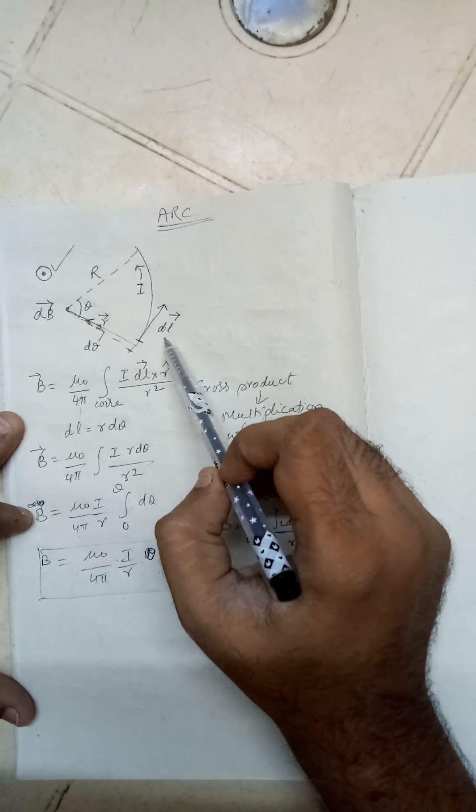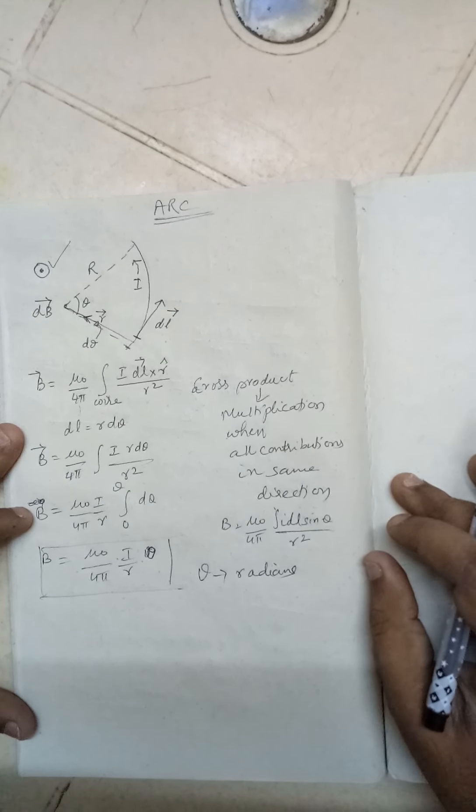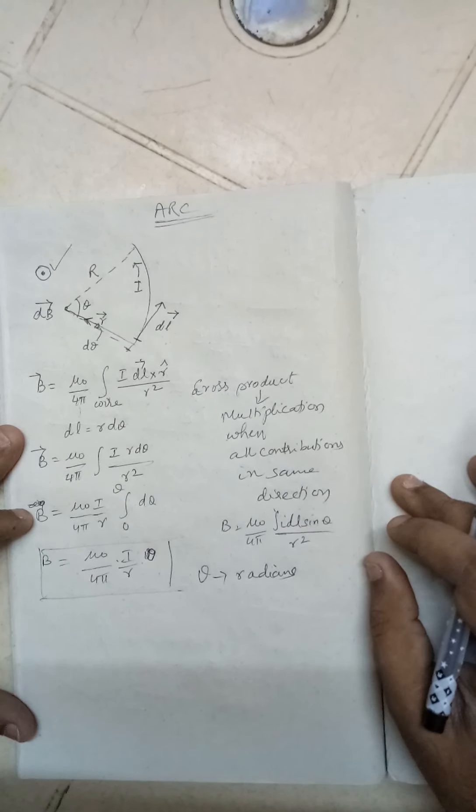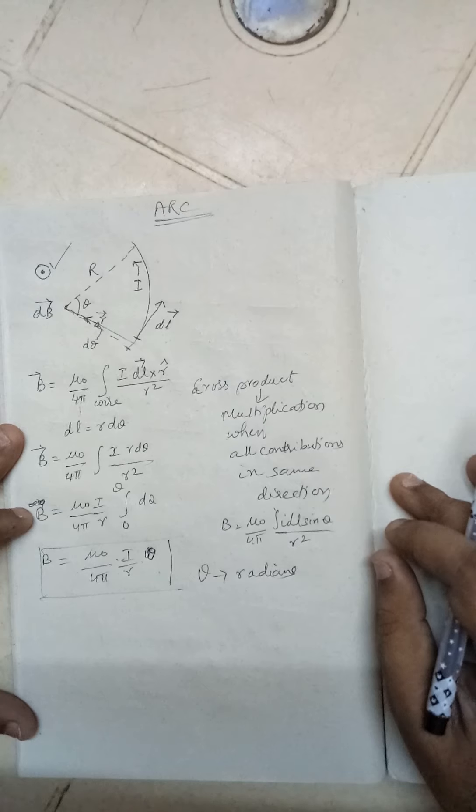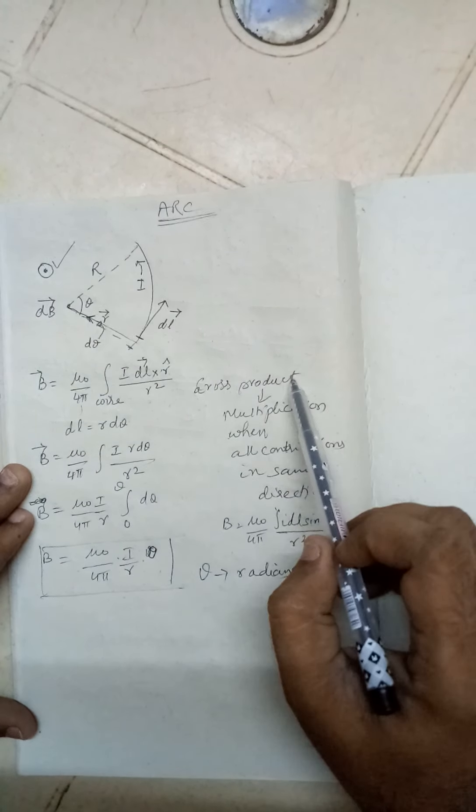Now remember this point: when all the points, all the small elements, are giving contributions of magnetic field direction in only one direction, you can consider the cross product as a simple multiplication. You can directly take the magnitude form. This cross product converts into multiplication when all contributions are in the same direction.